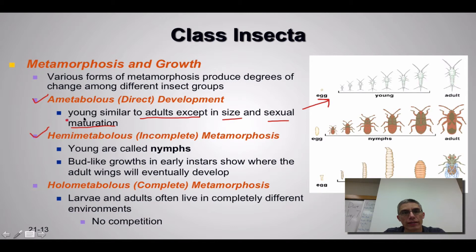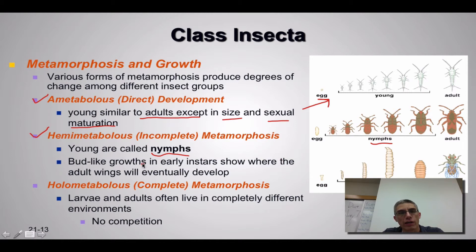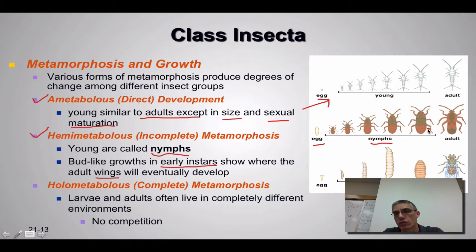The second group is hemimetabolous, or incomplete metamorphosis. In this case the young are called nymphs. They have bud-like wing growth in the early instars — showing where wings will be — but they don't get wings until the adult stage. So the stages are: egg, nymph, and adult.